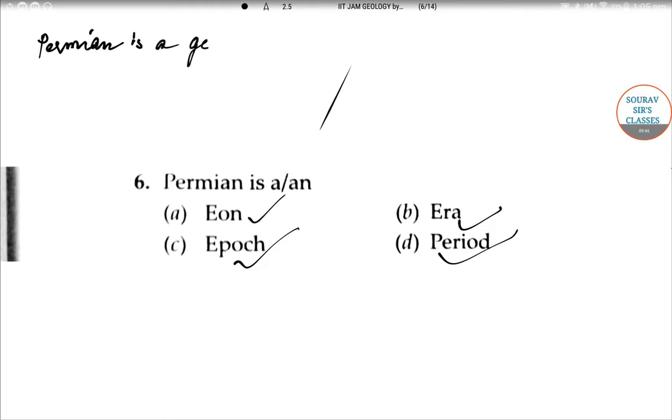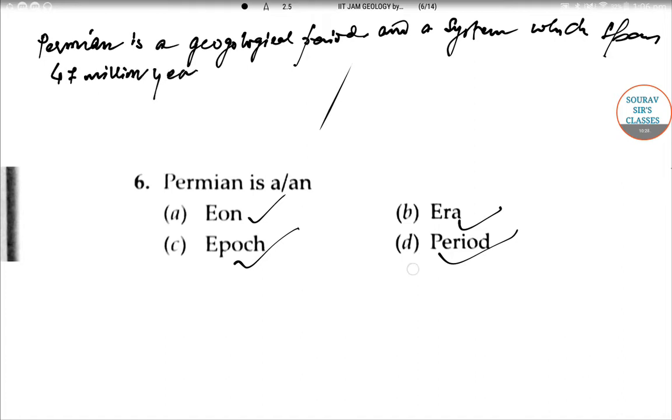Permian is a geological period. It is a geological period. A lot of periods have happened in the history of our development path, like Jurassic and Triassic as I told some minutes ago. It's a period, a system which spans around 47 million years. It's a huge time period. One million means 10 lakh, so imagine 47 million.